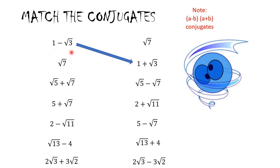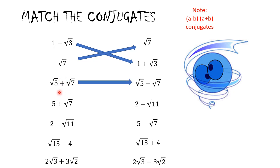Radical 7 — we do not have a first and a second term, so its conjugate is radical 7. For (radical 5 + radical 7), we search for the same numbers but instead of plus we look for minus. That gives us the conjugate.